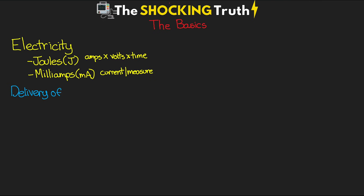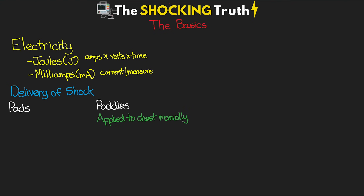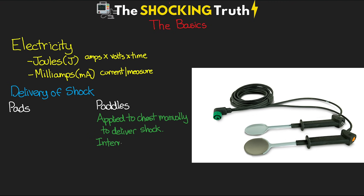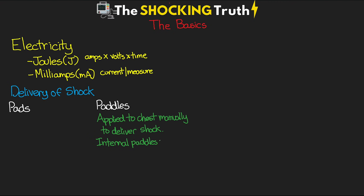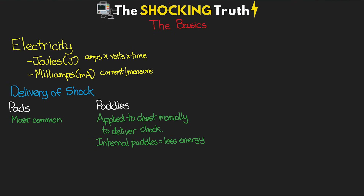Now let's talk about the delivery of the shock — how we get the electricity to our patient when needed. There are two main ways: paddles or pads. Many defibrillators have paddles attached to the side of the device, made famous by movies and TV shows, and these are applied to the chest manually to deliver the shock. There are also internal paddles that can be used directly on the heart and require much less energy. Pads are by far the most commonly used in the hospital today, as they're quick to place and often already attached to the defibrillator.